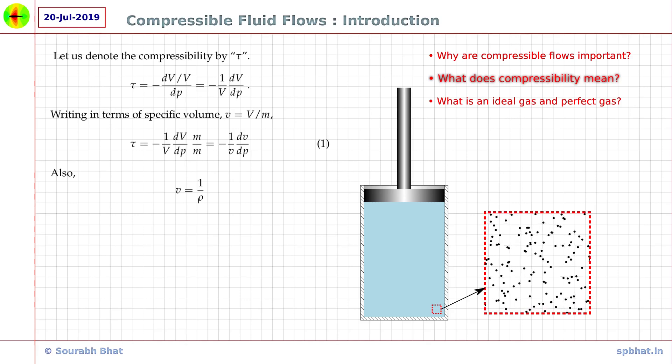We can also write specific volume as 1 divided by density, because density is defined as mass per unit volume. So, let's take a derivative with respect to pressure: dV by dP is equal to minus 1 by rho squared times d rho by dP. Substituting this in the above equation gives us another definition of compressibility as tau is equal to 1 over rho times d rho by dP. Notice the absence of negative sign in this equation, which means that an increase in pressure will result in increase in density.